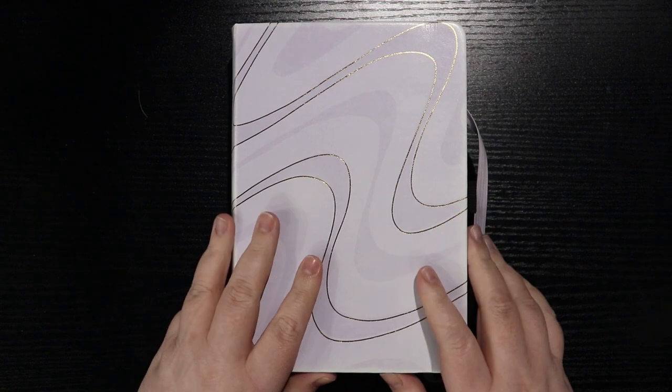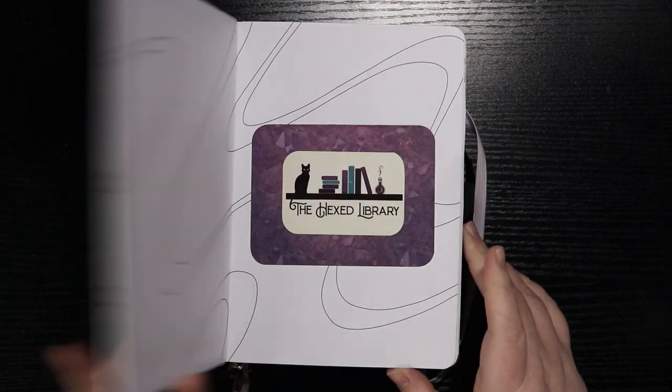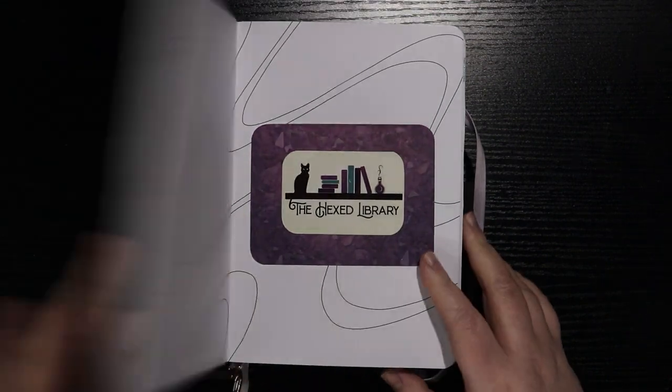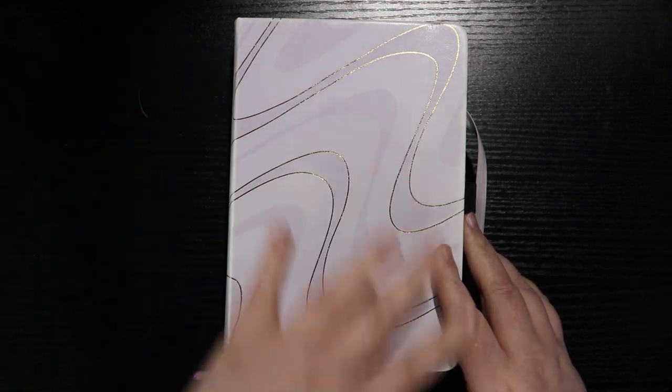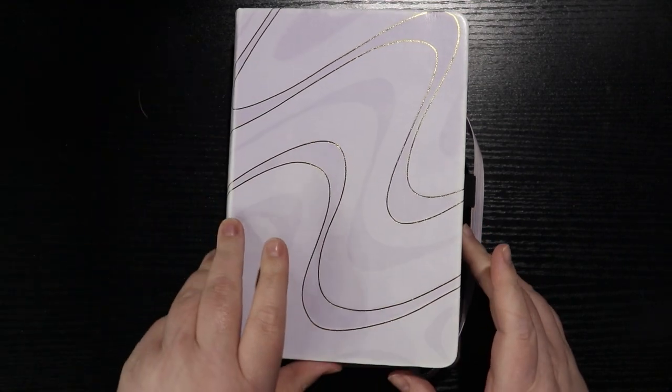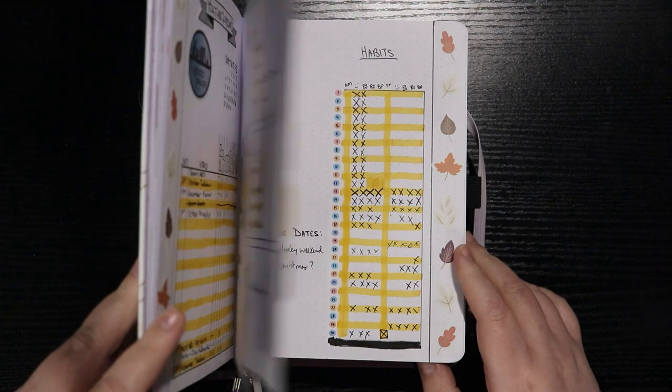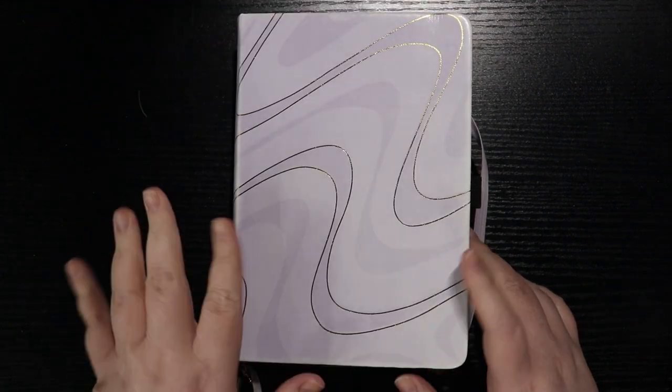If you have been following me on this new bullet journal journey, I have been using this purple wave pattern from Amanda Rach Lee for the past three months. I have decided to switch into a new planner for next year.